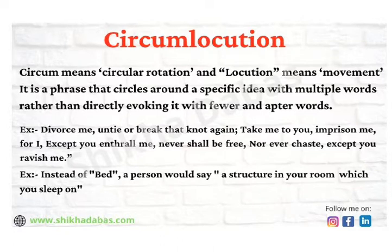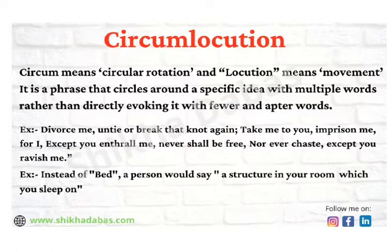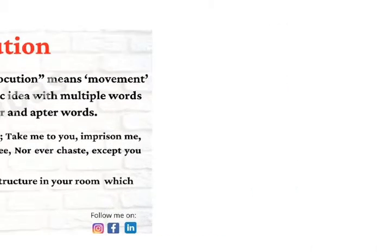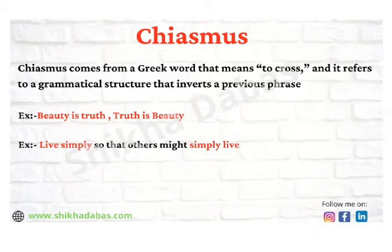In Donne's Holy Sonnet 14, it says: 'Divorce me, untie or break that knot again, take me to you, imprison me, for I except you enthralled me, never shall be free, nor ever chaste except you ravish me.' Donne used circumlocution to add artistic value — he could have said this in one or two lines but moved around the same idea. Similarly, instead of 'bed,' a poet might say 'a structure in your room which you sleep on.'